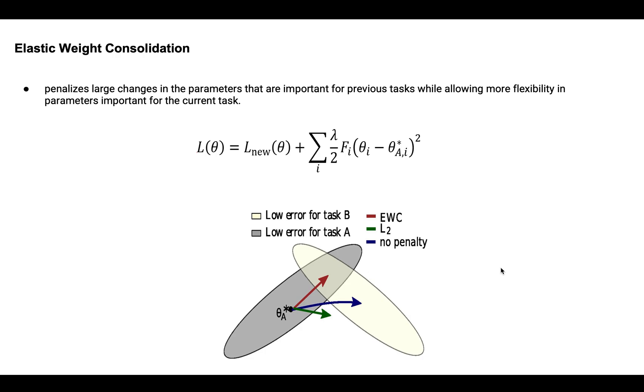As a solution, EWC or elastic weight consolidation comes into play. EWC resolves this problem by making the process of learning new tasks as elastic as possible. It means it slows down learning on certain weights of the neural network that are important for previous tasks.